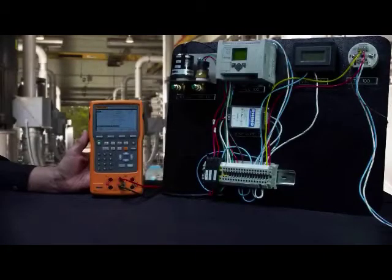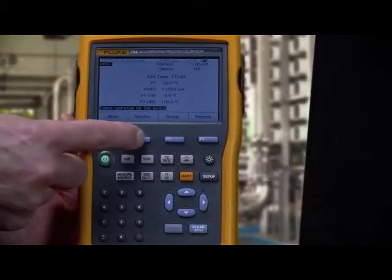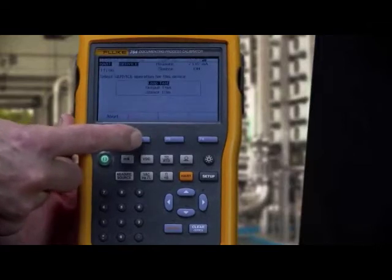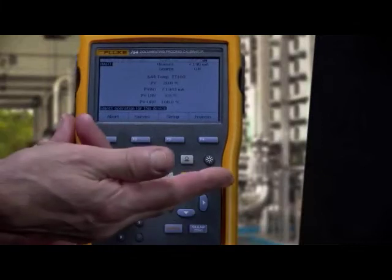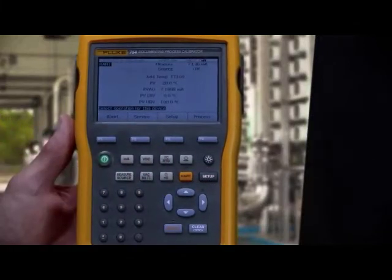Need more HART capability in your calibrator? Consider the Fluke 754 documenting HART calibrator that adds HART sensor trim, extensive source and measurement functionality, and calibration documentation capabilities to the functions included in the 709H.